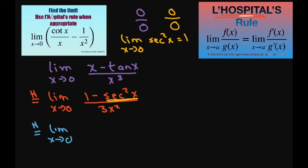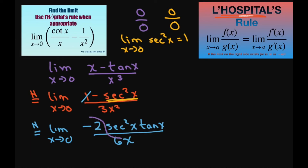The numerator's derivative gives negative 2 secant squared of x times tan of x, and the denominator becomes 6x. We can pull out the constant negative one-third in front, giving us negative one-third times the limit as x approaches zero of secant squared of x times tan of x divided by x.